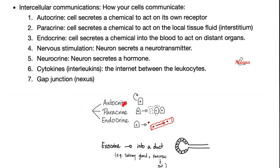What's the difference between autocrine, paracrine, and endocrine? Autocrine is a cell that secretes something to act on the same cell. Paracrine: a cell secretes something to act on the neighboring cells locally. Endocrine is a cell that secretes something and dumps it into the bloodstream. The bloodstream is going to take it to distant locations globally, all over your body.